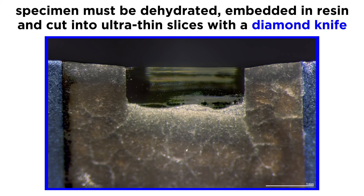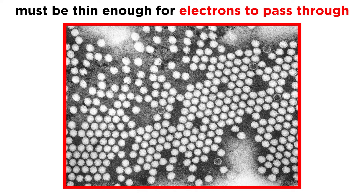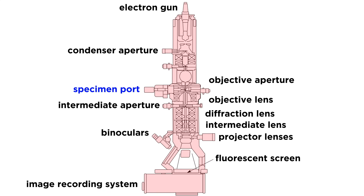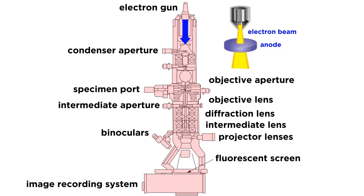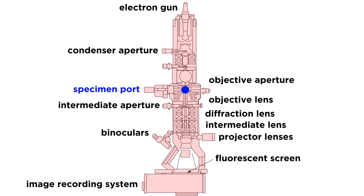For the stained specimen to be viewed by TEM, it must be dehydrated, embedded in plastic resin, and cut into ultra-thin slices with a glass or diamond knife. The sections must be ultra-thin so that the electrons can pass through them. When the specimen is secured in the specimen holder, an electron beam is generated and shot out of the electron gun. The electron beam is accelerated down the column of the microscope after passing through the anode. The electron beam then passes through the specimen, once again losing energy as electrons pass through electron-dense regions. The electrons then pass through the objective lens, magnifying the image, before passing through the projector, or ocular lens, which magnifies the image further and projects it onto the fluorescent screen.